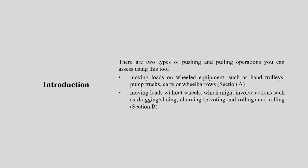There are two types of pushing and pulling operations that we are going to assess through this tool. The first is moving loads on wheeled equipment — transferring load using something with wheels, such as hand trolleys, pump trucks, cars, wheelbarrows, etc. That will be Section A. The second is moving loads without wheels. Depending on your context you should choose which section to use for the analysis. Without wheels, activities may include dragging, sliding, churning, or rolling — all these will be considered for Section B.